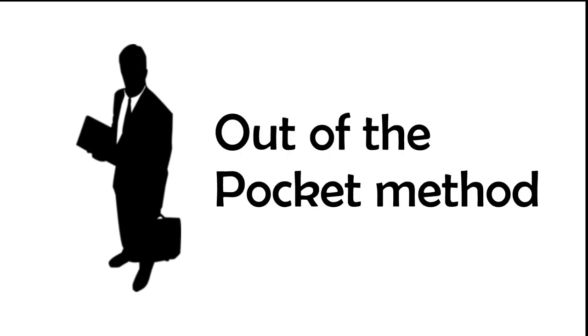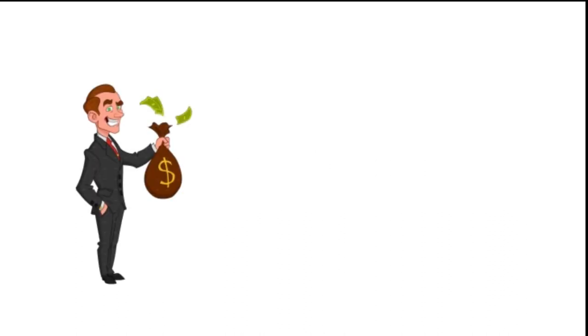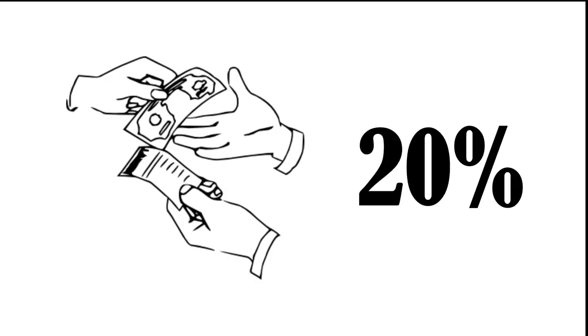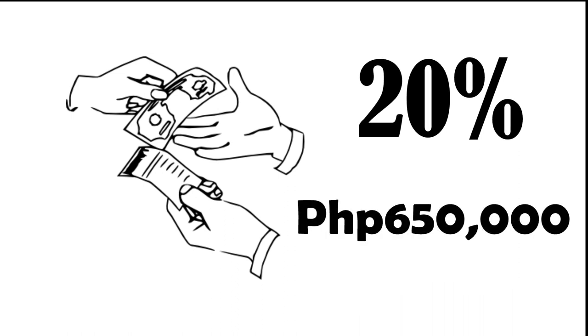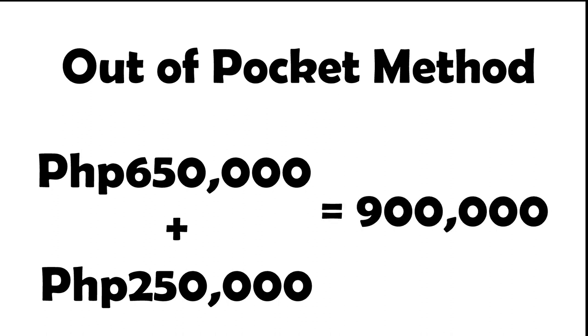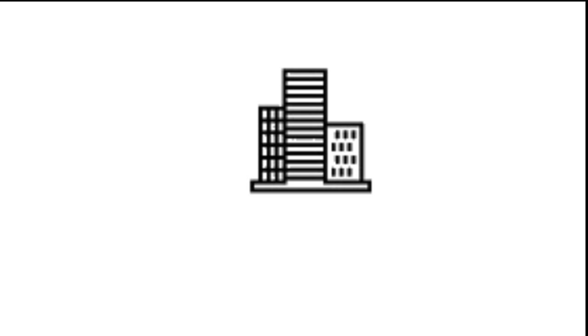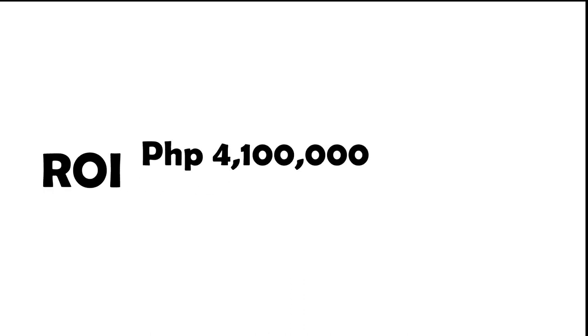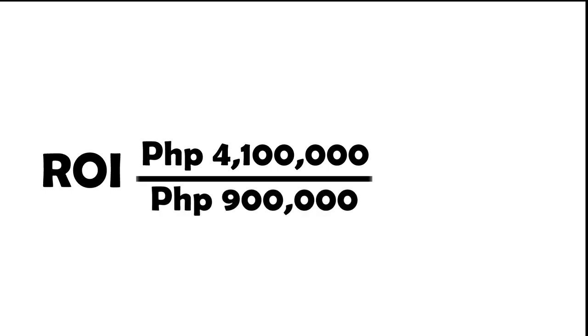Most experienced real estate investors prefer the out-of-pocket method, or in common terms, the down payment method. Using the same numbers, the property was purchased for 3 million pesos, this time financed by a loan requiring only 20 percent down payment amounting to 650,000 pesos. The total out-of-pocket expense is 900,000 pesos — 650,000 for the down payment plus 250,000 for furniture. With the property valued at 5 million pesos, the equity position is 4 million 100,000 pesos, giving an ROI of 4,100,000 divided by 900,000, which equals 4.55 or 455 percent ROI.